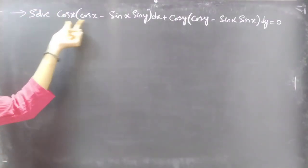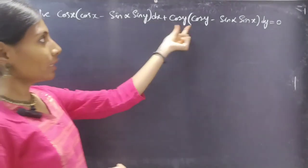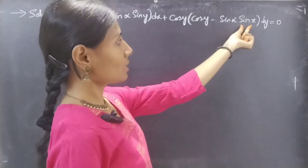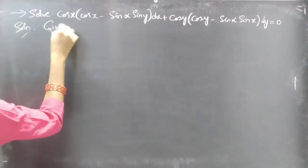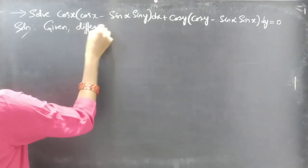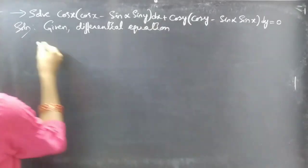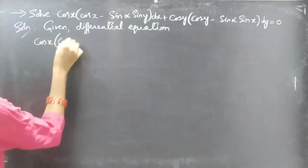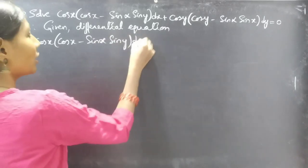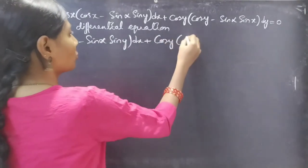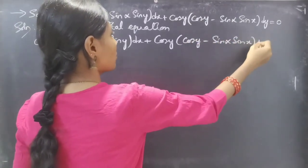Problem: solve cos(x)(cos(x) - sin(α)sin(y)) dx + cos(y)(cos(y) - sin(α)sin(x)) dy = 0. This is the given differential equation.